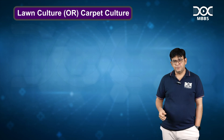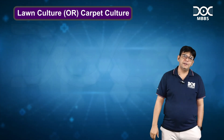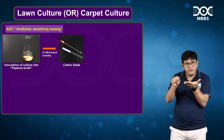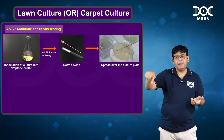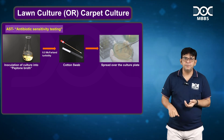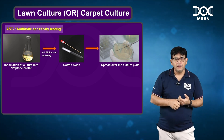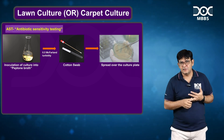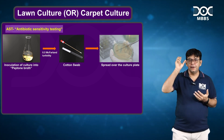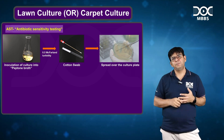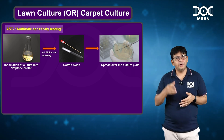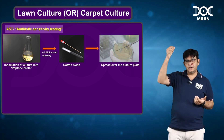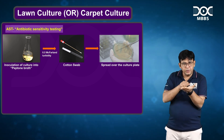Then there is a method termed as lawn or carpet culture. Lawn and carpet culture is done for AST testing. You have an MHA plate; you take a cotton swab, dip it into peptone broth to which you have added the culture colonies, and spread it all over the plate. For AST, there are standards termed as McFarland standards — specifically the 0.5 McFarland standard, which is the standardized concentration for growing bacteria on the culture plate by the lawn method.